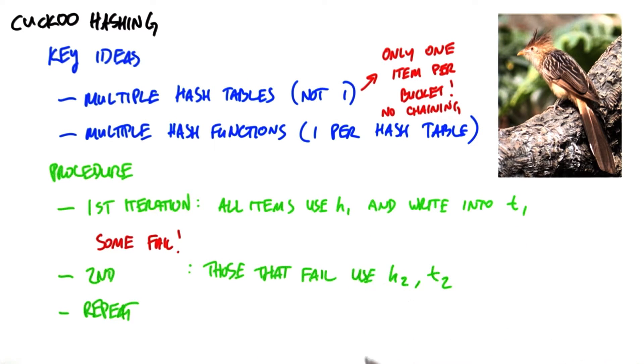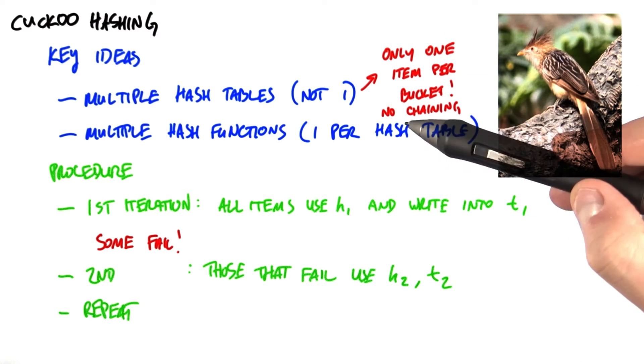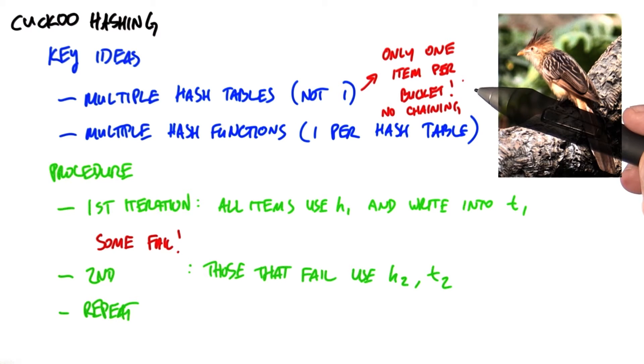The key to this method is having multiple hash tables instead of just one. Multiple hash functions, one per hash table. And those hash tables only allow one item in each one of their buckets. There is no chaining in this algorithm at all.